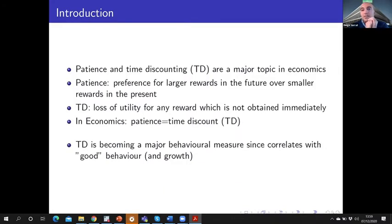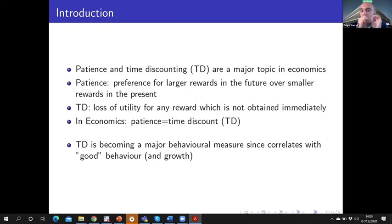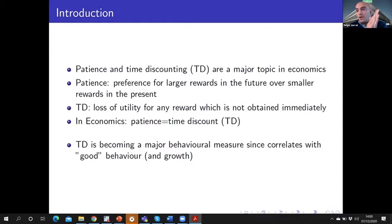Patience and time discounting is becoming a major topic in economics. Patience refers to the preference for larger rewards in the future over smaller rewards in the present, while time discounting refers to the utility loss of any reward not obtained immediately. Both definitions are correlated, and in economics we can say that both measures are the same.